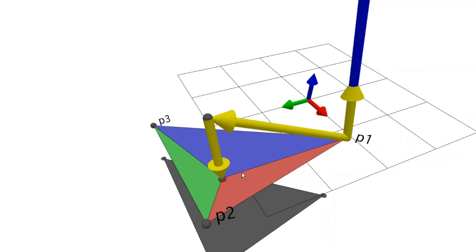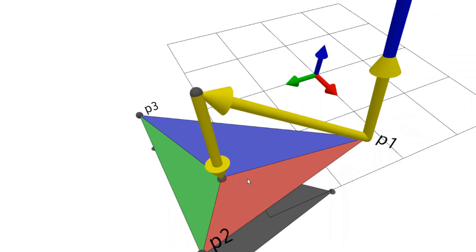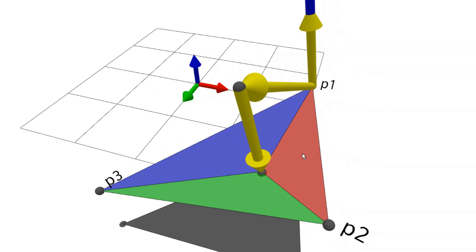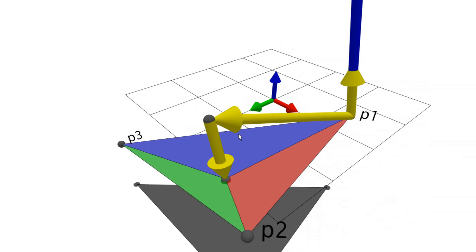To do that, we draw lines connecting the projected point to each vertex of the triangle. That gives us three triangles, and the sum of the areas of these triangles will equal the area of our triangular face only when the point is inside the triangle.